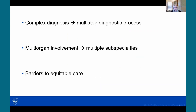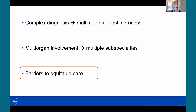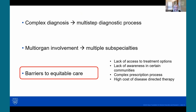The final challenge to highlight is the barriers to equitable care. This includes lack of access to treatment options, lack of awareness in certain communities, the complex prescription process, and the high cost of disease-directed therapy.